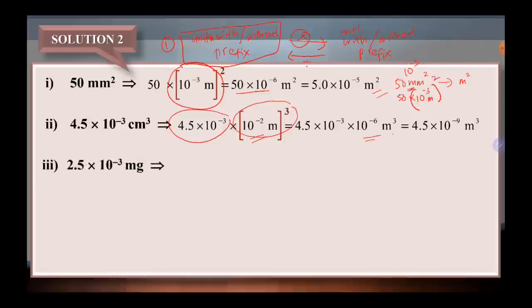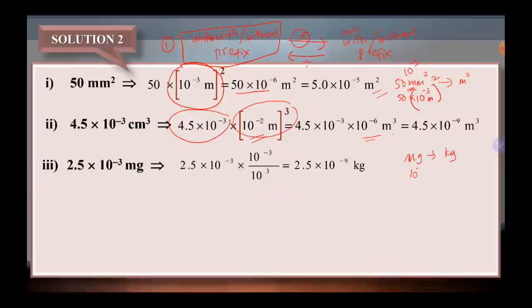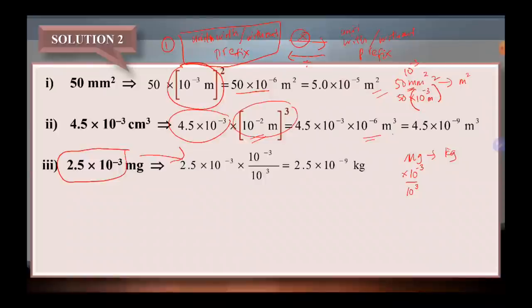Next question: 2.5 times 10 power negative 3 milligram. Kita nak convert kepada kilogram. Milligram nak convert kepada kilogram. Sebelah kiri kita darabkan dengan 10 kuasa negatif 3. Sebelah kanan kilo, so kita akan bahagikan dia dengan 10 kuasa 3 — sebab prefix sebelah kanan, ke kanan nak ke kiri, kita jadikan dia bahagi kepada 10 kuasa 3. So 2.5 darab 10 kuasa negatif 3, darabkan dengan 10 kuasa negatif 3, bahagikan dengan 10 kuasa 3. Jawapan kita adalah 2.5 times 10 power negative 9 kilogram.